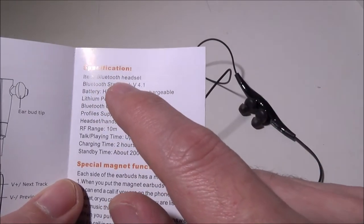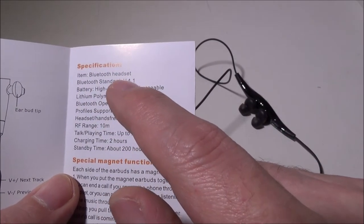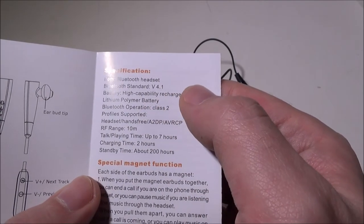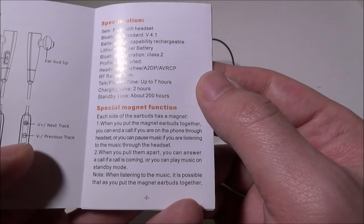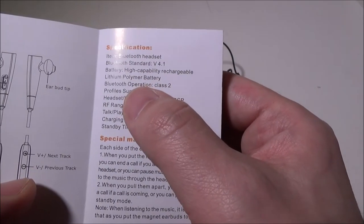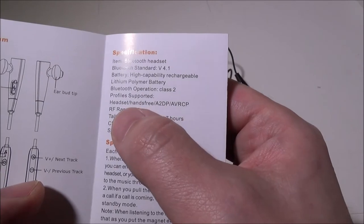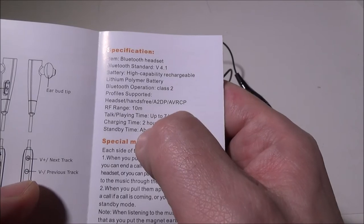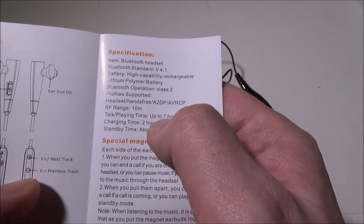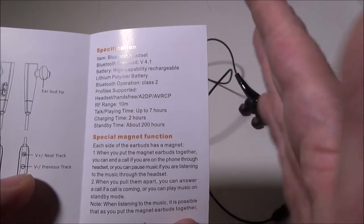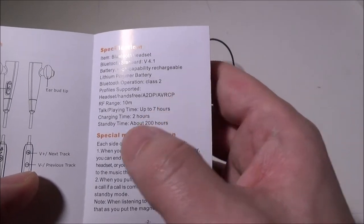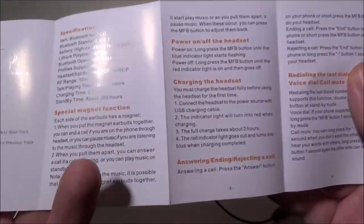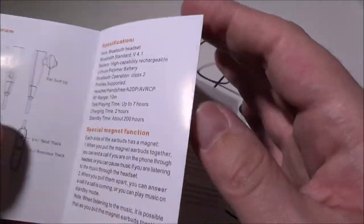Specifications on this guy: Bluetooth version 4.1, high capacity rechargeable lithium polymer battery, though they don't tell us exactly how big the battery is. Bluetooth operation class 2, it supports headset, hands-free, A2DP, AVRCP, and that range of 10 meters or 33 feet. The talk and playing time is up to seven hours, charging time takes about two hours, though it only took us about an hour and a half to charge ours up, and it has a standby time of 200 hours.